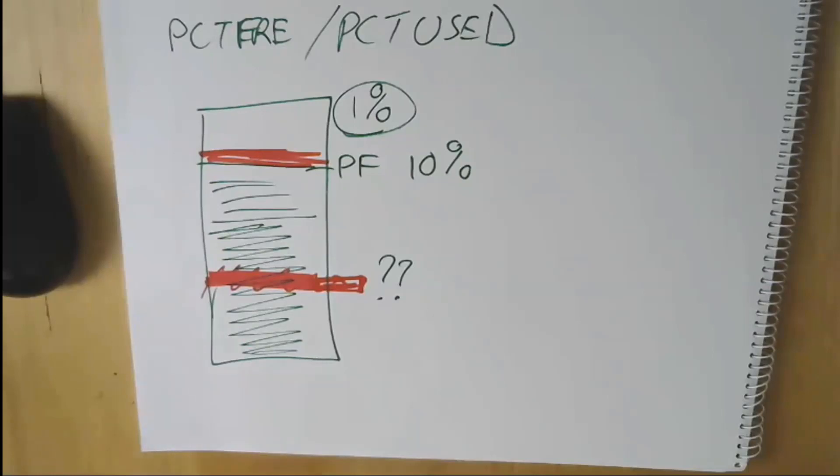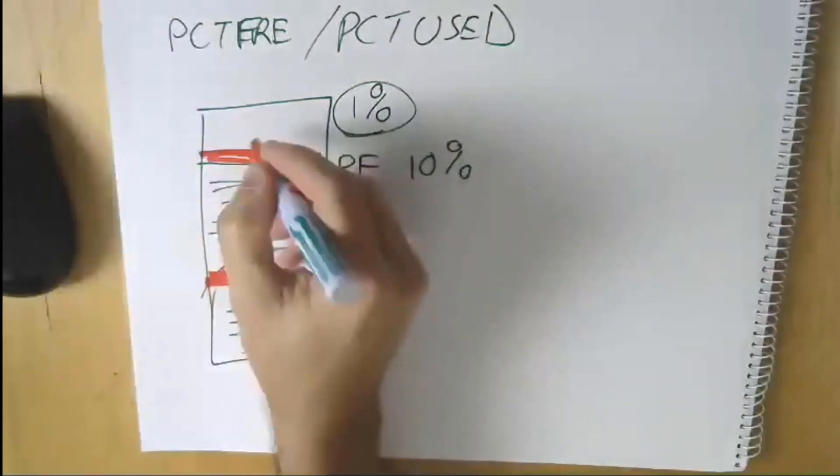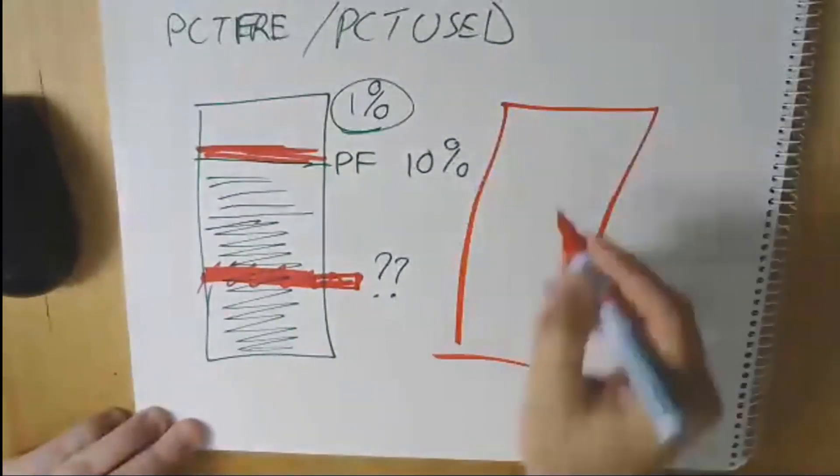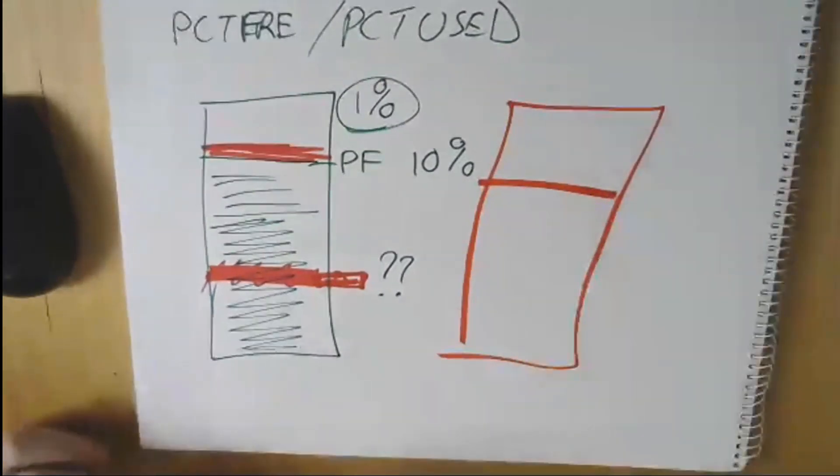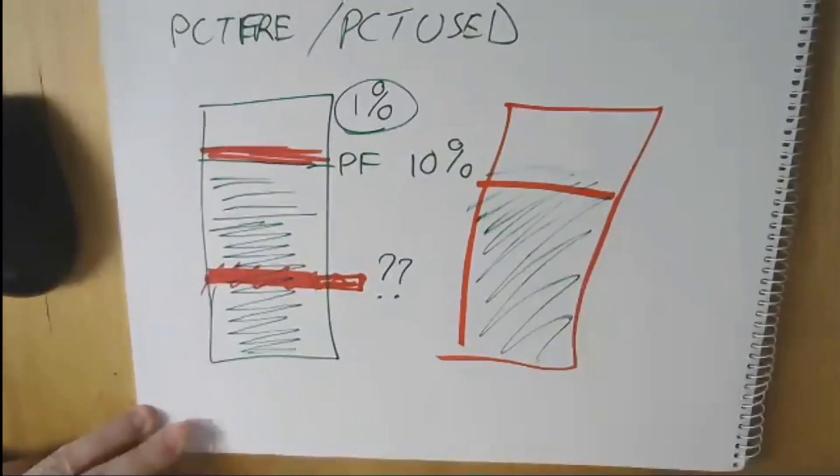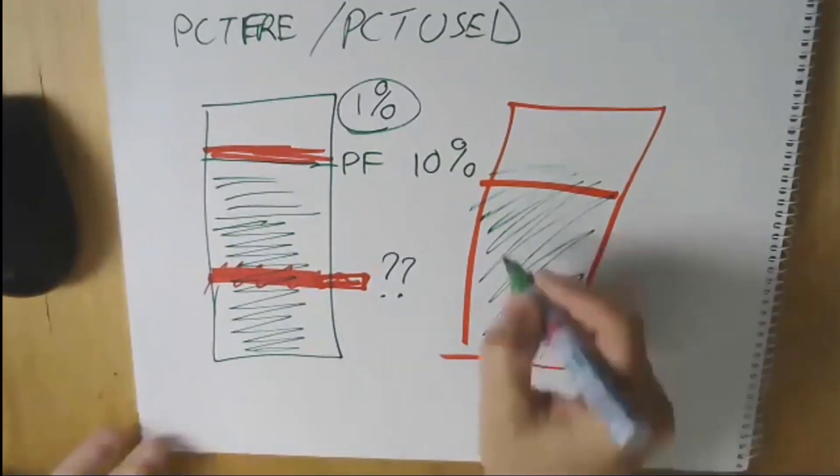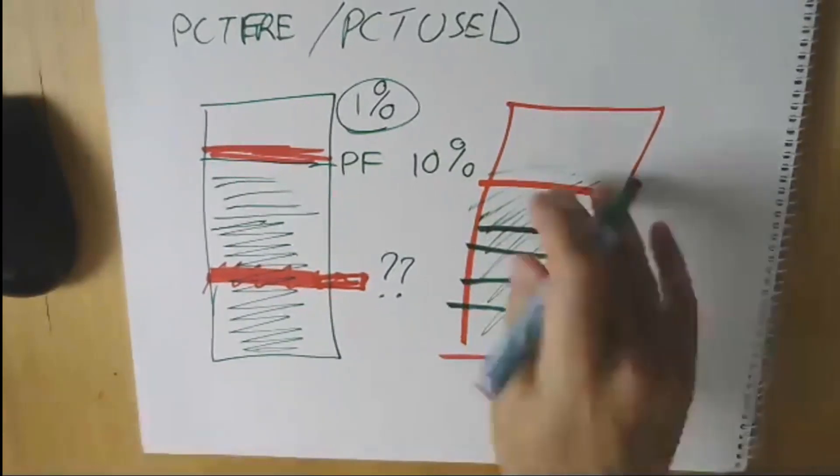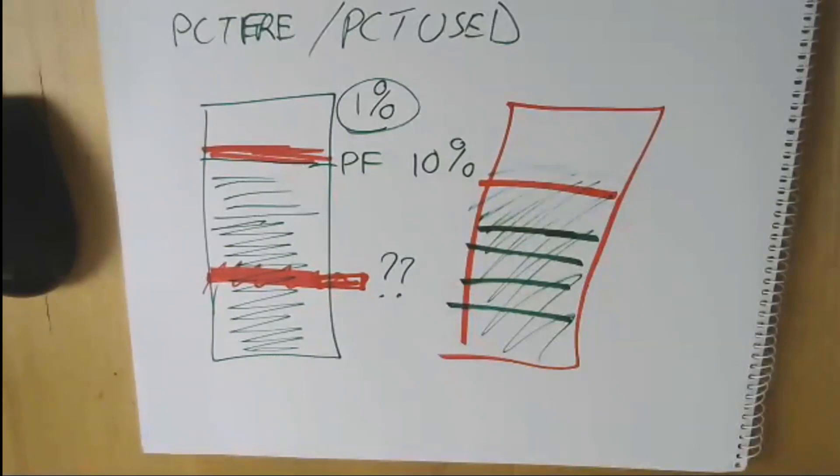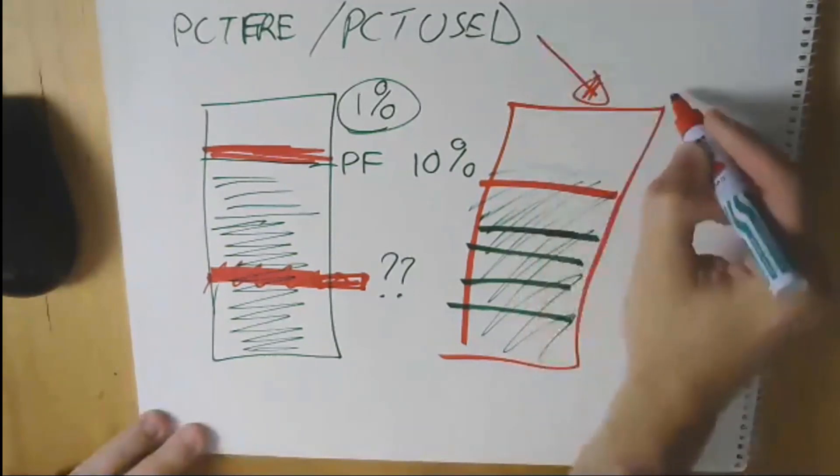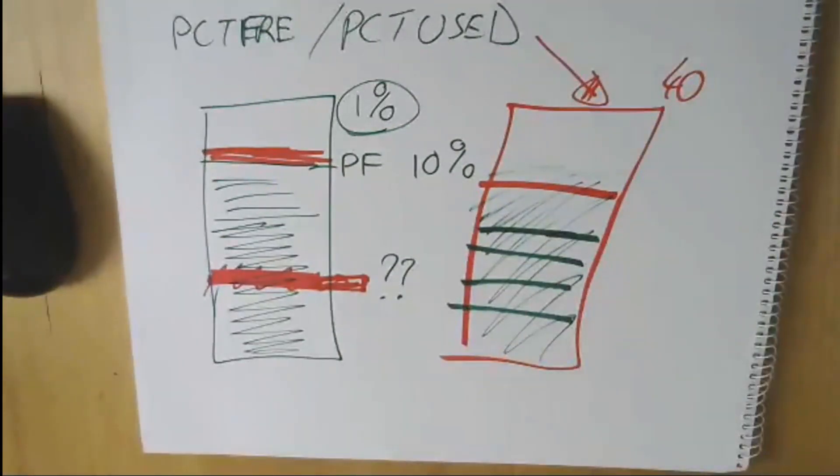Percent used came in when a block became full, crossed that margin. So we've got a block which has crossed the 10% threshold, grown up to here. Then someone comes along and does some deletes, and we start creating free space. Eventually, that block should be available to be reused. That's what percent used was. We used to set that to 40.